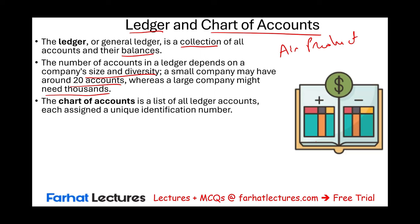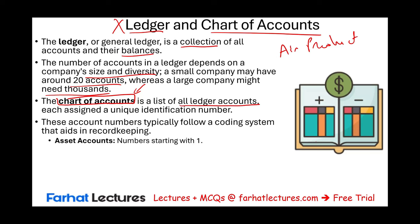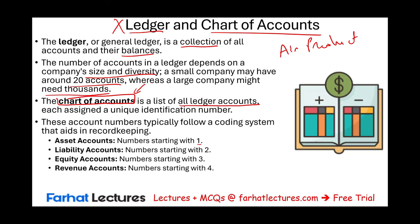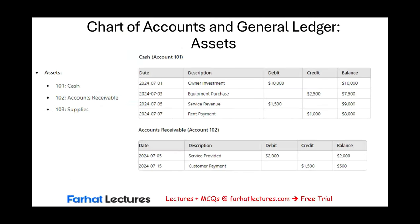The chart of accounts is a list of all ledger accounts, each assigned a unique identification number. All asset accounts start with the number one — for example, cash might be account 100 or 1000. Liability accounts start with two, equity with three, revenues with four, and expenses with five. For large companies, just the cash accounts alone might span from number 10,000 to 10,050, which is why the chart of accounts can be enormous.